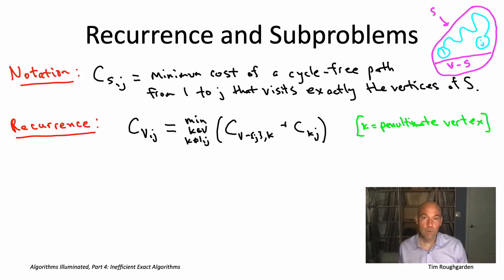This time to the smaller set of vertices. So more generally, if we replace capital V in this equation with any subset capital S of vertices, we get exactly the same recurrence.